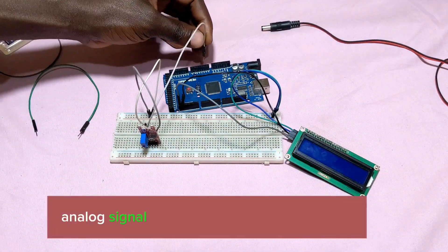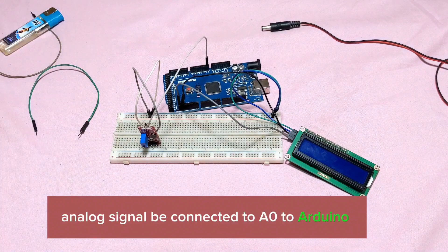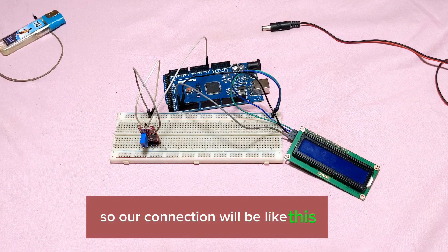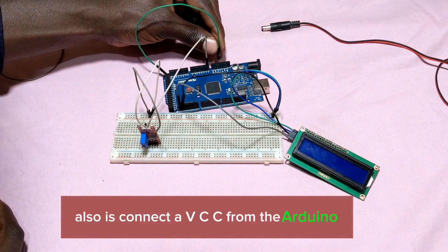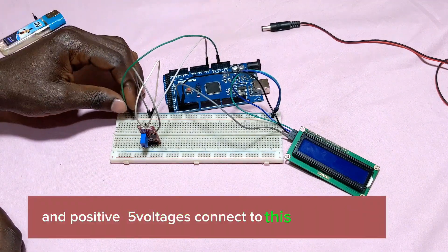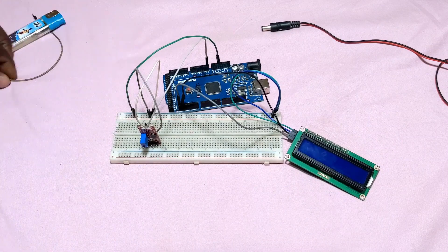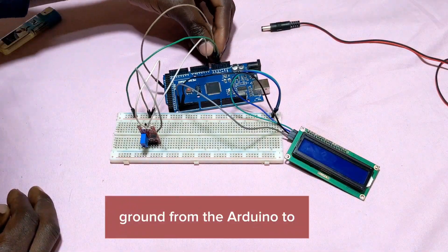Connect VCC from the Arduino - the positive five voltage connects to this pin. Also connect ground from the Arduino.